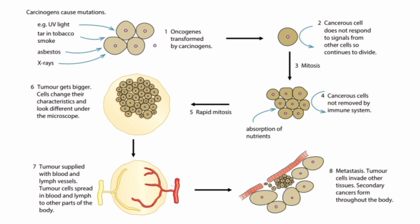Carcinogens cause oncogenes to develop, which leads to cancer. Number two: cancerous cells do not respond to signals from other cells, so they continue to divide. The brain, neurons, and the rest of the body cannot stop cancer because it doesn't respond to any control signals.